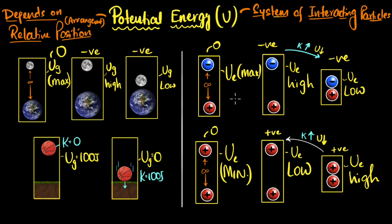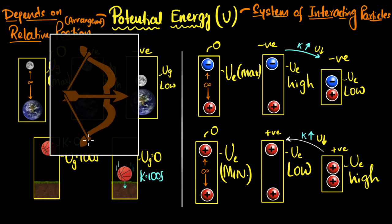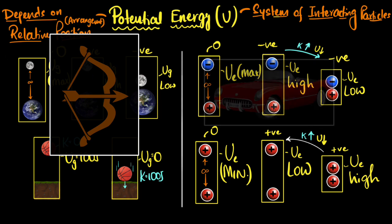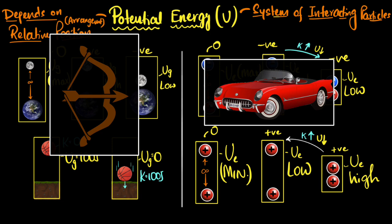Just as the electric force manifests in everyday life as tension, contact, chemical, and spring forces, electric potential energy also manifests as different kinds of potential energies in daily life. For example, elastic potential energy, where energy depends on the arrangement of atoms — certain arrangements have higher energy, others lower, and releasing that energy converts it to kinetic energy, like the kinetic energy of an arrow shot from a bow. Similarly, chemical energy stored in fuels depends on the arrangement of molecules, atoms, and electrons. The right chemical reactions move from one arrangement to another, releasing that energy to do useful things like make a car run — essentially converting it into kinetic energy.